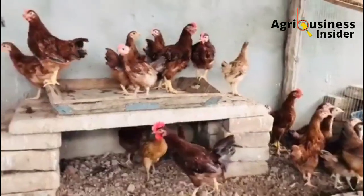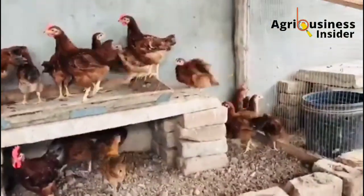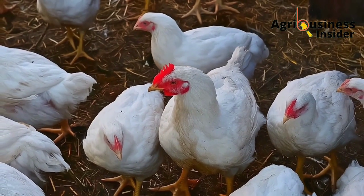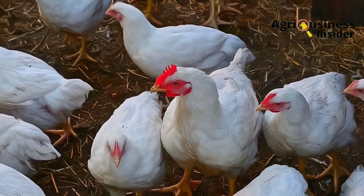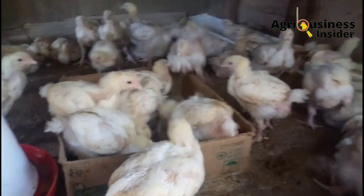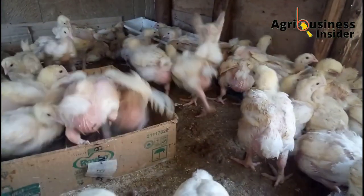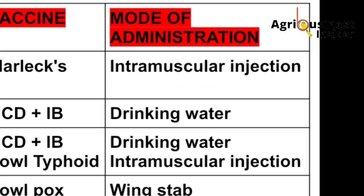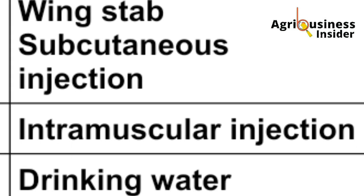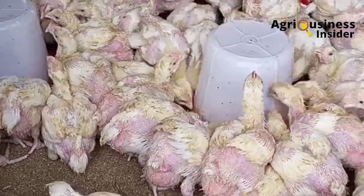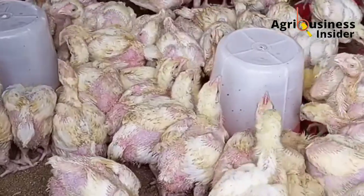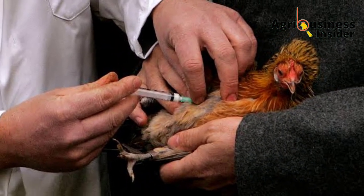Now let us discuss how to administer vaccines in broilers and layers, and some safety precautions to ensure that the vaccine is effective after administration. Note that different vaccines have different modes of administration as you have seen on the vaccination program tables. I want to particularly discuss administration through drinking water.